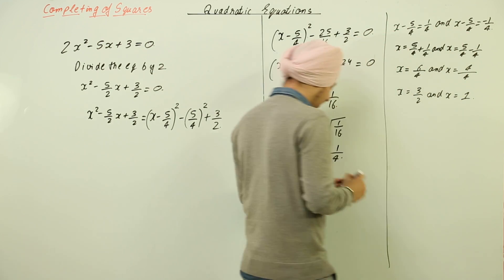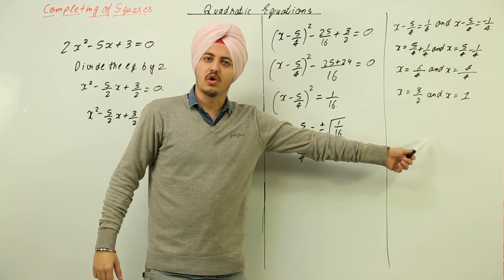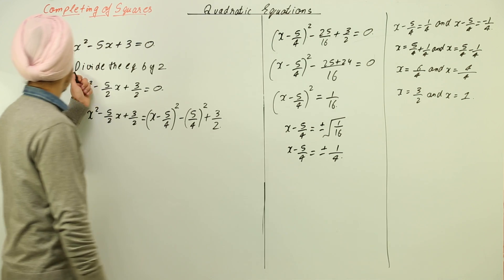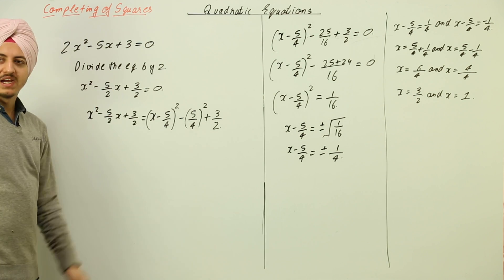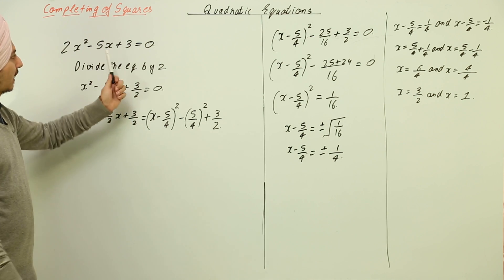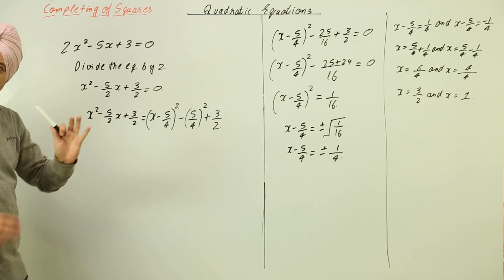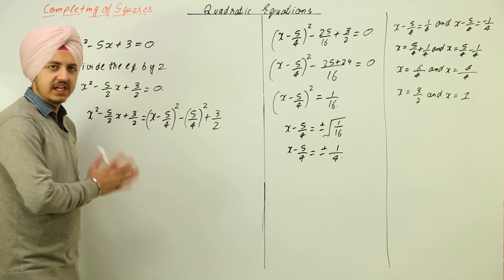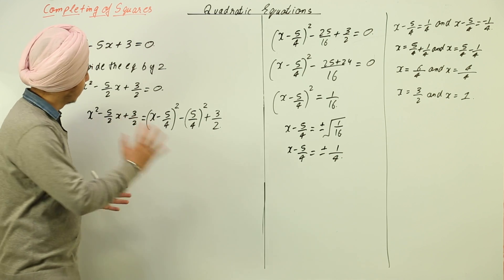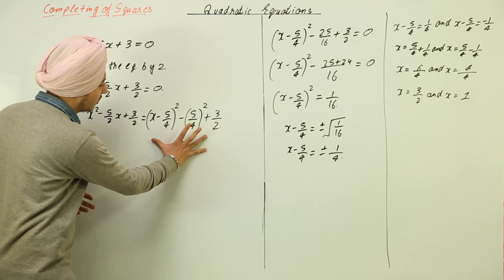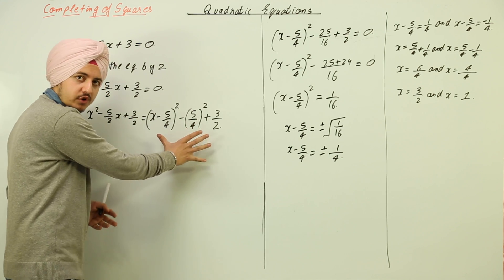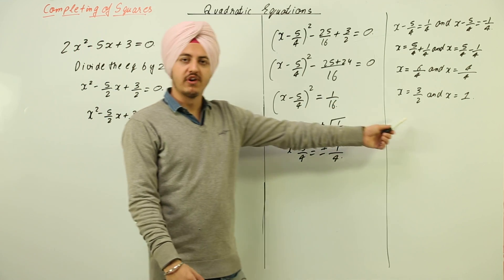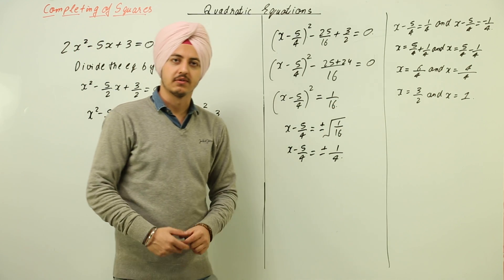So the two solutions to the quadratic equation 2x² minus 5x plus 3 equals 0 are x equals 3/2 and x equals 1. The only key in completing the square is knowing how to write that completed square step — if you know that, you will always be able to find the solution.